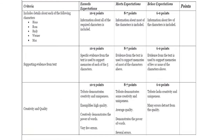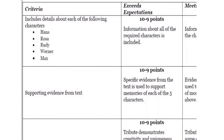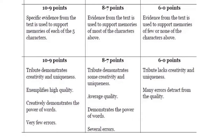Let's take a look at the rubric for this assignment. Because the grading criteria focuses on the goal of the assignment and not the format, we can use one rubric to evaluate a variety of assignments. The first criterion is to include details about each of the characters, and the characters are listed so students can check them off. The second criterion is including supporting evidence from the text — students need to provide specific evidence from the text to support memories of each of the five characters. The last criterion is creativity and quality, which outlines what must be included to earn full points: the assignment needs to demonstrate creativity and uniqueness, be high quality, creatively demonstrate the power of words, and have very few errors. Spelling and grammar aren't my learning goals here, so they represent a small amount of the total points for the assignment.